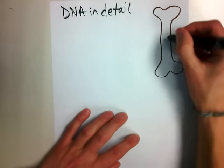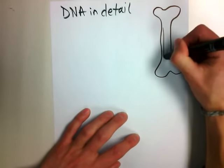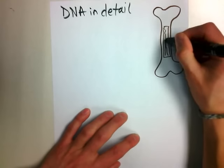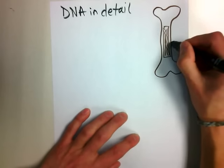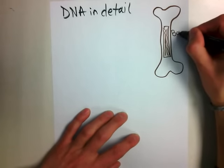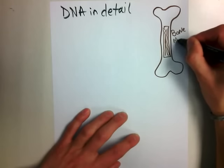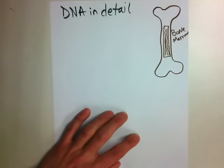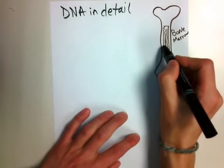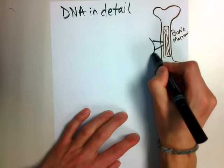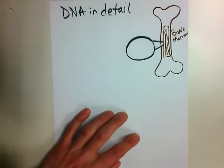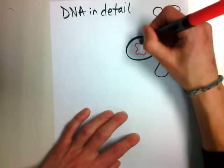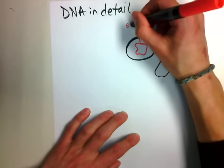A long time ago we talked about bone marrow. We talked about the high altitude unit to make more red blood cells. So I just drew a cut out and inside this bone we have our bone marrow. Inside that bone marrow are many, many cells. We're just going to look at one — this small little guy — we're going to call this early red blood cell.